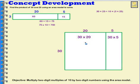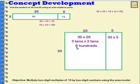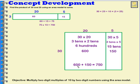When I multiply 30 times 20, I can think of it as 3 tens times 2 tens. 3 times 2 is 6, and 10 times 10 is 100, so the product is 600. For 30 times 5, I think of it as 3 tens times 5 — that's 15 tens, which equals 150. Adding 600 plus 150 gives 750. My product is the same.